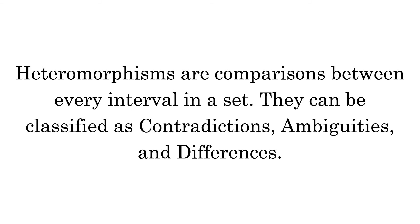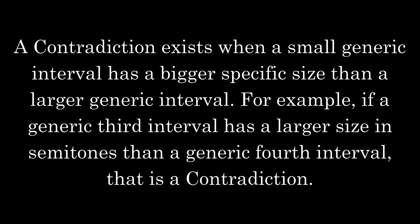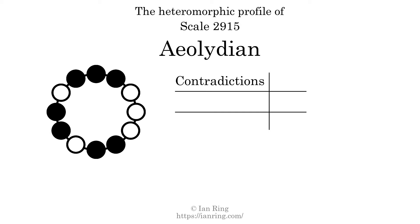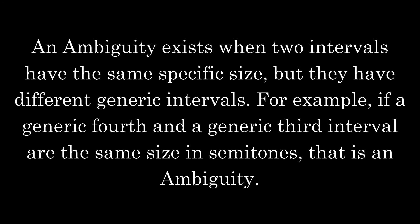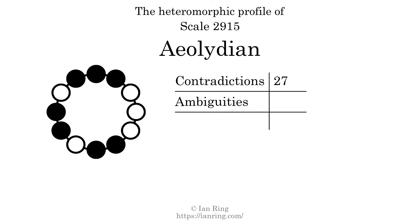Heteromorphisms are comparisons between every interval in a set. They can be classified as contradictions, ambiguities, and differences. A contradiction exists when a small generic interval has a bigger specific size than a larger generic interval — for example, if a generic third interval has a larger size in semitones than a generic fourth interval. The number of contradictions in this scale is 27. An ambiguity exists when two intervals have the same specific size but different generic intervals — for example, if a generic fourth and a generic third interval are the same size in semitones. The number of ambiguities in this scale is 24.